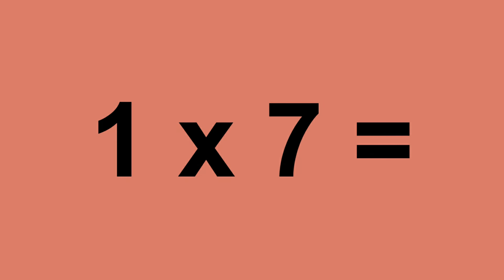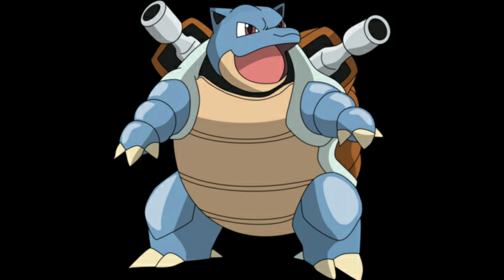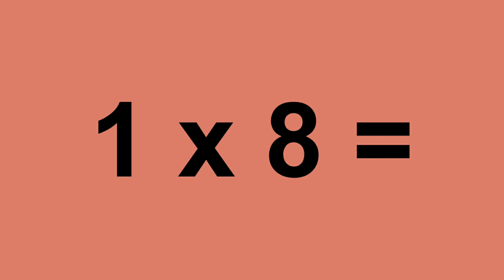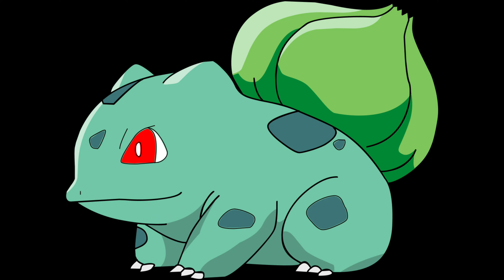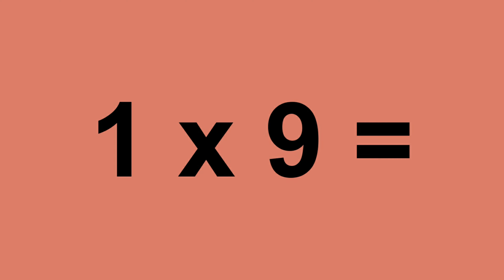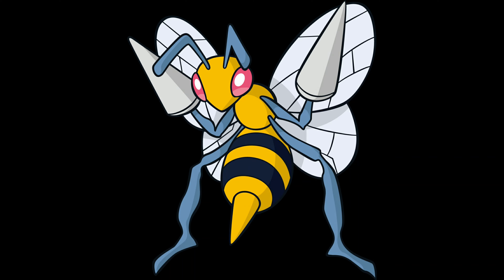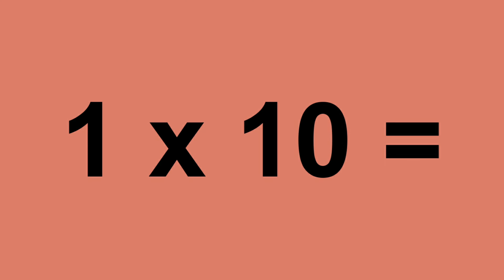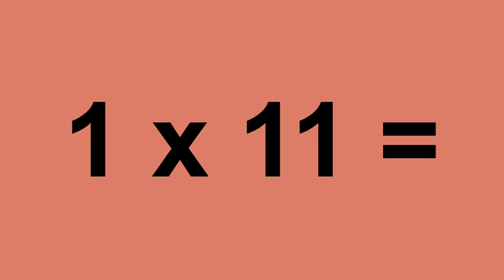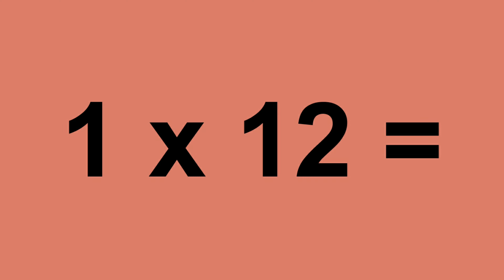One times seven equals seven. One times eight equals eight. One times nine equals nine. One times ten equals ten. One times eleven equals eleven. One times twelve equals twelve.